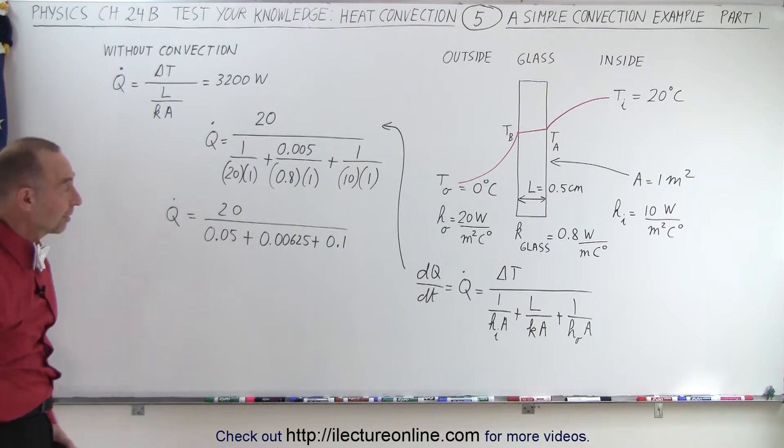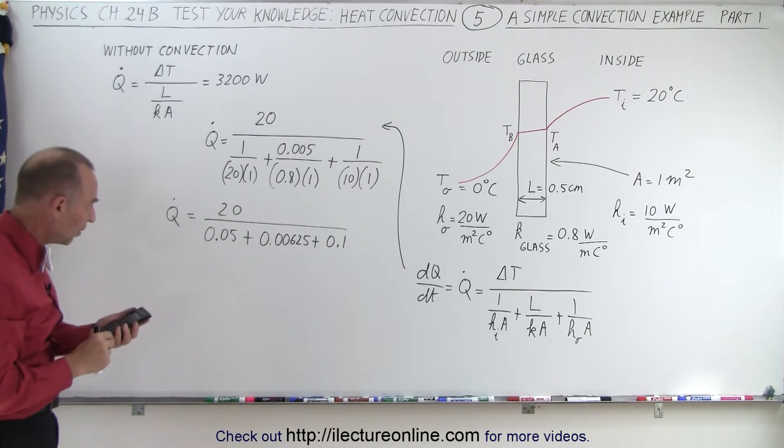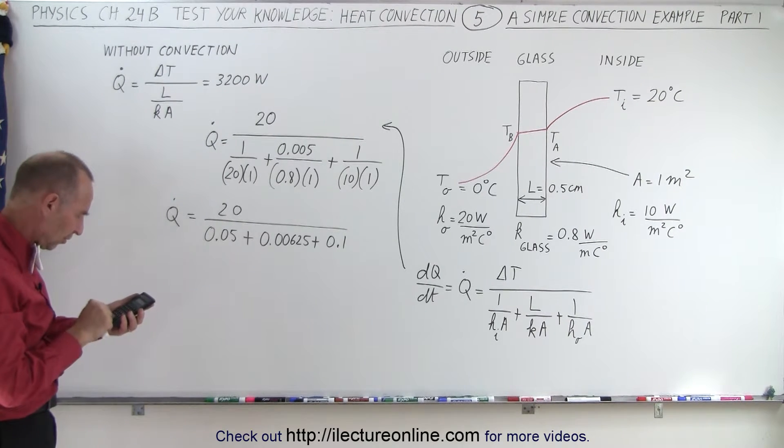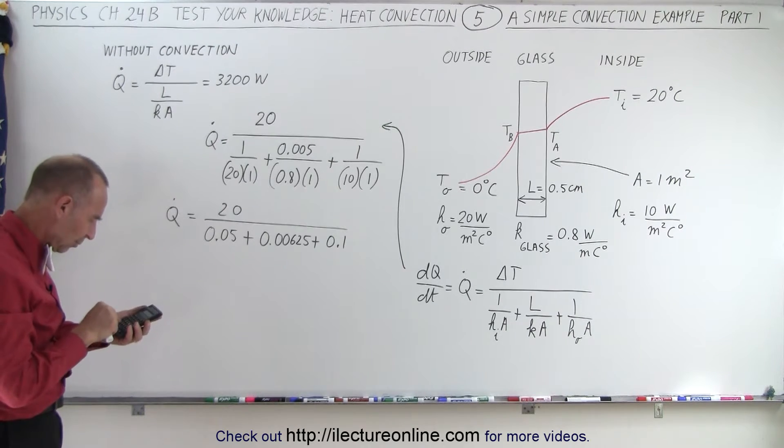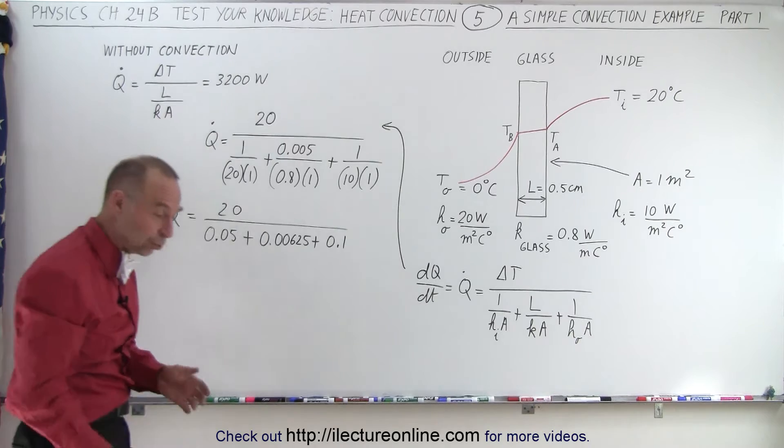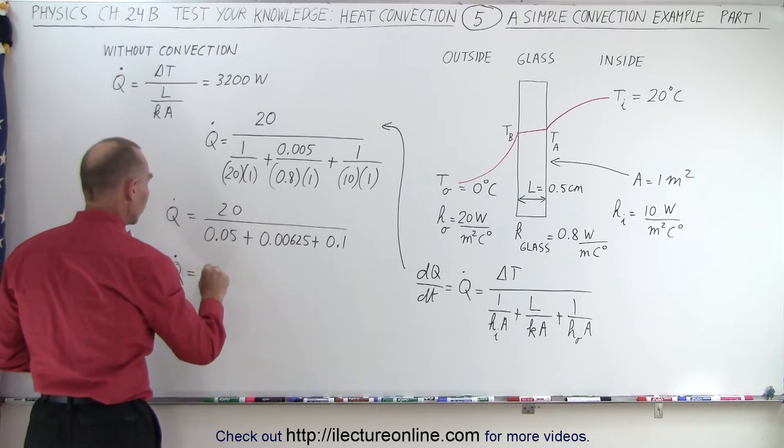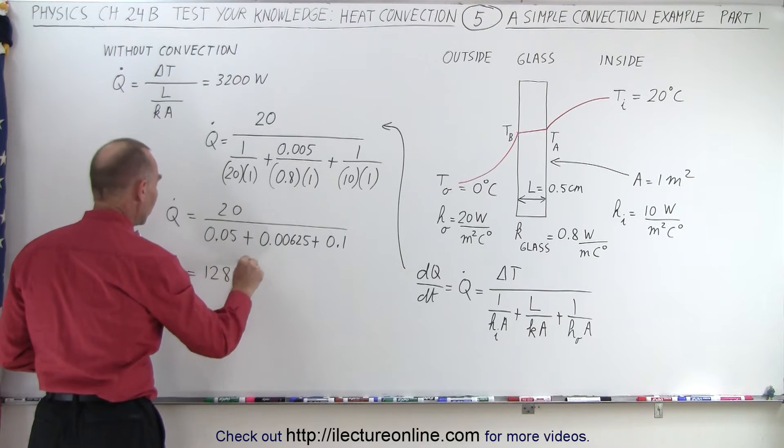That is because of the convection. Now plug in these numbers: we get 0.15 plus 0.00625, take the inverse of that times 20, which is 128 watts. So the heat flow through the window is only 128 watts.